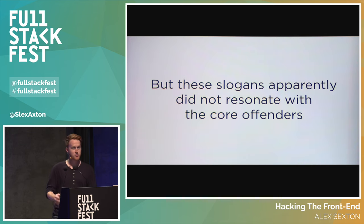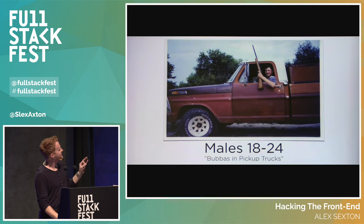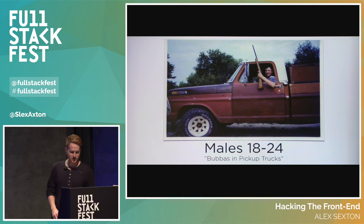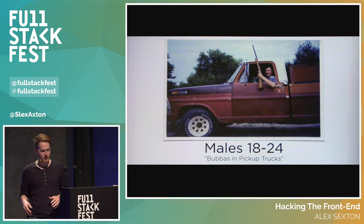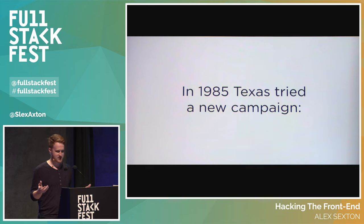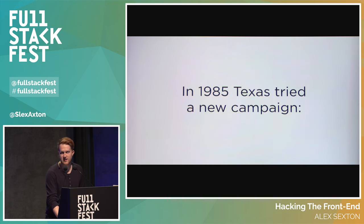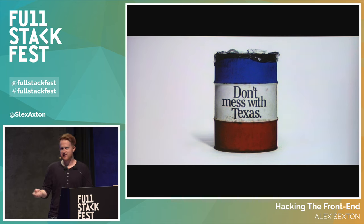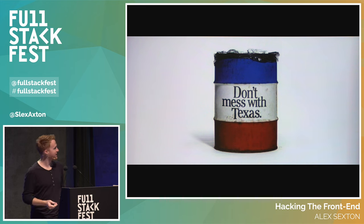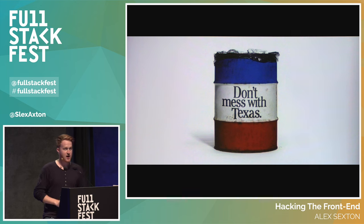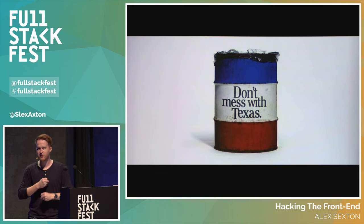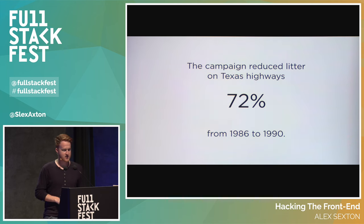They did some research and recognized that the people doing the littering were 'Bubbas in pickup trucks,' males 18 to 24 — the core demographic throwing trash on the side of the road. So in 1985, Mike Blair and Tim McClure of GSD&M, a big advertising firm in Austin where I'm from, teamed up with the Texas Department of Transportation and created an anti-littering campaign called 'Don't Mess with Texas.' It worked — they reduced litter on Texas highways by 72%.